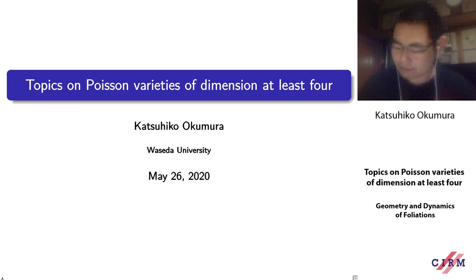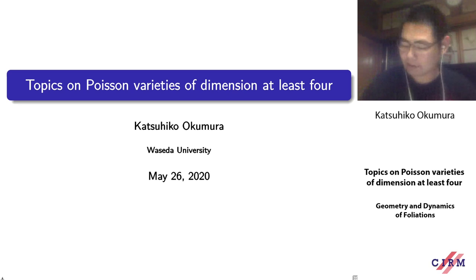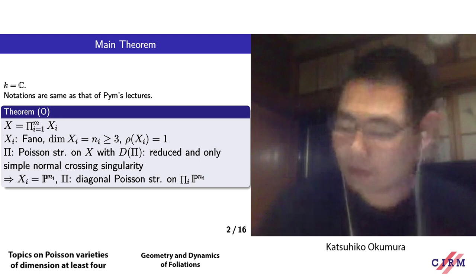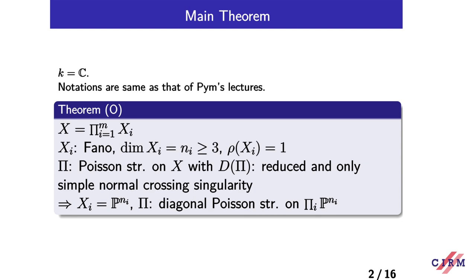Today I talk about the classification of Poisson structures on higher dimensional varieties, mainly for even dimensional varieties. In this talk, I assume the base field is the complex number field.